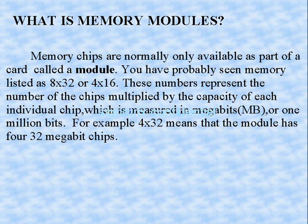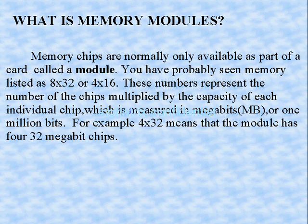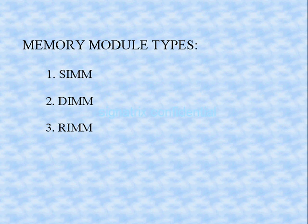For example, 4 by 32 means the module has 32 megabit chips — so all figures are in terms of megabits. Memory chips available in a very big design are known as a memory module. There are three types of memory module: first is SIM, second is DIM, and third is SRIM.